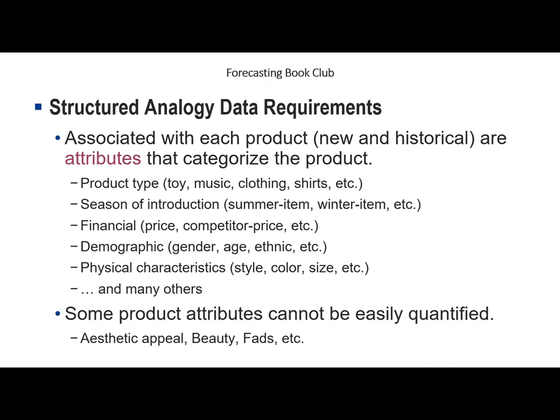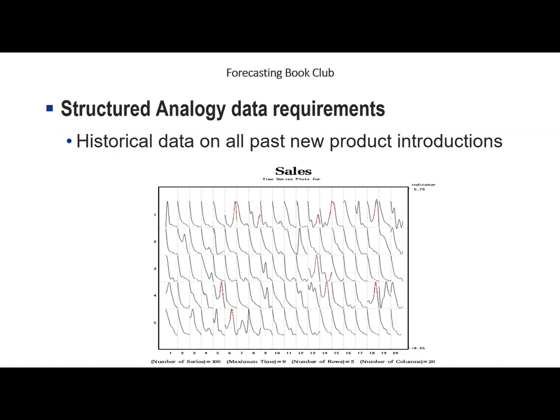The approach begins with a classification of attributes for each product — the new product as well as current and historical products. Attributes can include product type, introduction date, financial aspects like selling price and competitor pricing, demographics about the expected purchaser, and physical characteristics like size and color. Some attributes may be difficult to quantify. While Paul worked through a pharmaceutical example, I'll use a different example: movie DVD sales, which have a peculiar sales pattern that makes for a nice illustration.